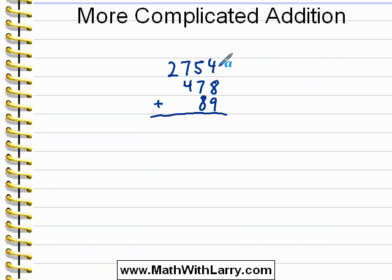Now if it's helpful, you could certainly do 4 plus 8, which is 12, and just write it off to the side, just in a little scrap area, and then add 9 to get 21. If that's helpful, you can certainly do that.